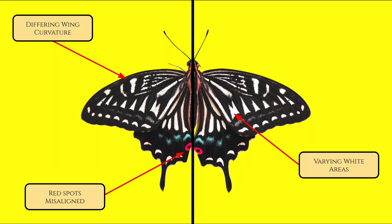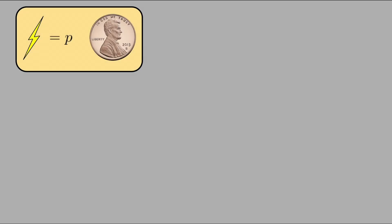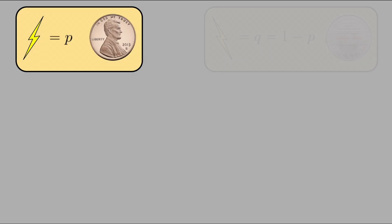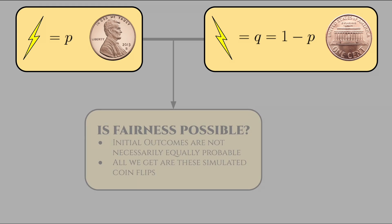Suppose we wanted to tackle this problem of bit generation by referencing some process in nature that occurs with probability p. We can represent nature's randomness as an unfair coin that lands with heads probability p and tails with probability q equals 1 minus p. Then the question becomes this: Can we design some schema such that we can simulate two fair outcomes, i.e., an unbiased coin toss from this inherently biased starting point?